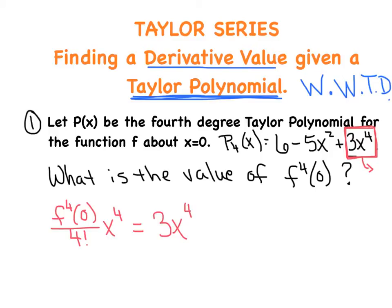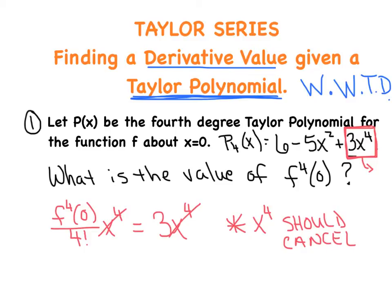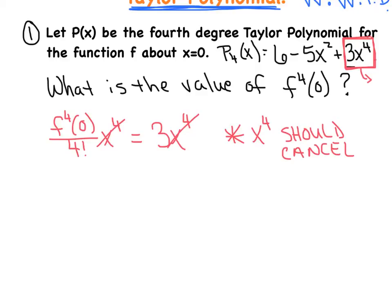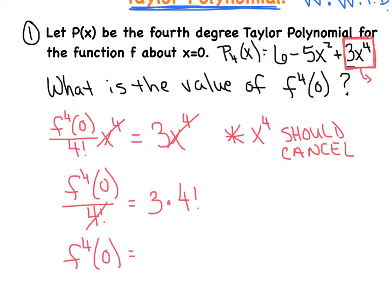Something really special should happen every time we set these up: I can divide both sides by X to the fourth, and those terms cancel. The X to the whatever power should always cancel. If they don't cancel perfectly, something's off — we set it up wrong or grabbed the wrong term from the Taylor series. Once those cancel, I multiply the four factorial to the other side, and the fourth derivative evaluated at zero is 3 times 4 factorial. Four factorial is 24, and 3 times 24 is 72.